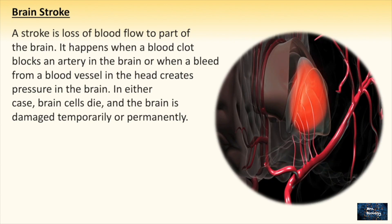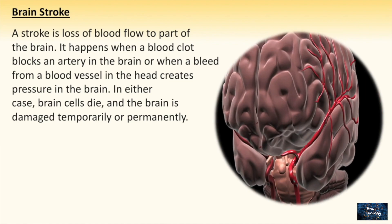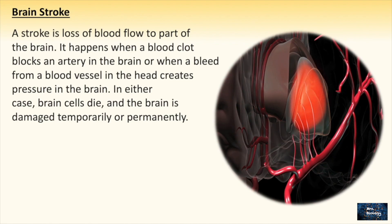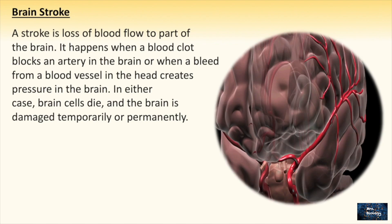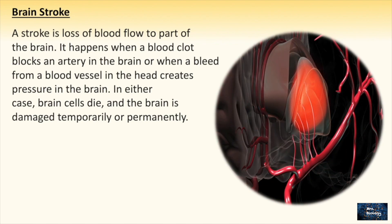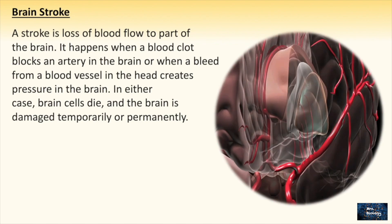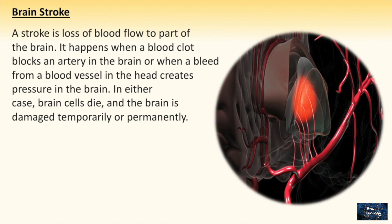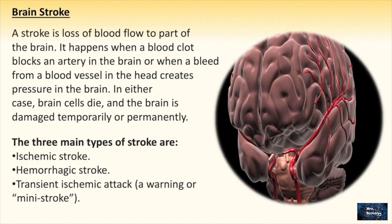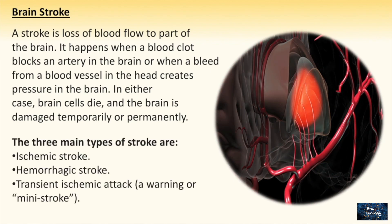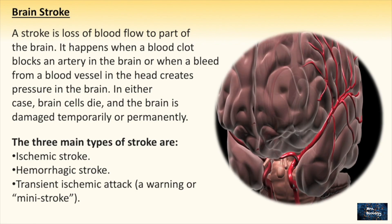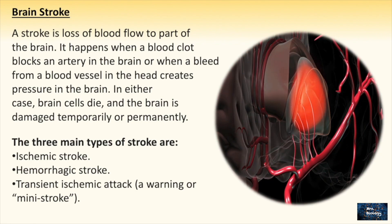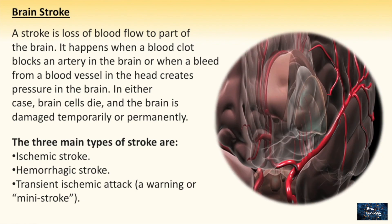Moving to brain stroke: a stroke is a loss of blood flow to part of the brain. It happens when a blood clot blocks an artery in the brain, or when a bleed from a blood vessel in the head creates pressure in the brain. In either case, brain cells die and the brain is damaged temporarily or permanently. There are three types of strokes: ischemic stroke, hemorrhagic stroke, and transient ischemic attack, which serves as a warning for a mini stroke.